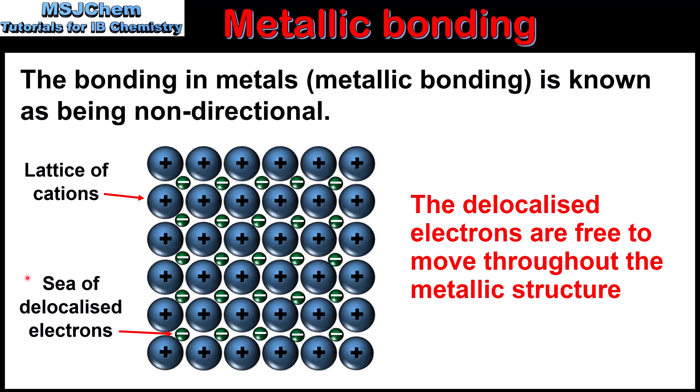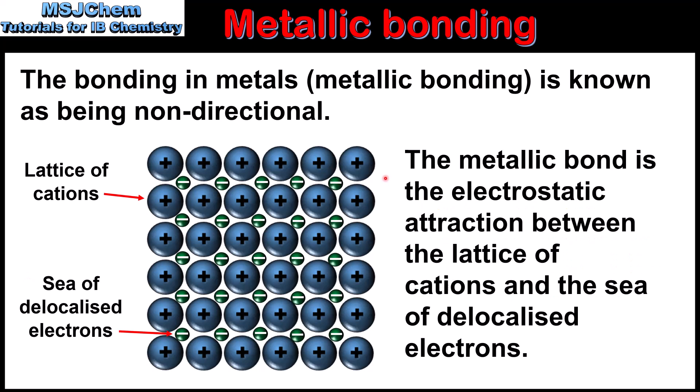As we'll see later in the video, the delocalized electrons in the metallic structure are responsible for many of the properties. On the right we have the definition of a metallic bond, which is defined as the electrostatic attraction between the lattice of cations and the sea of delocalized electrons. The attraction between the cations and the delocalized electrons is what makes up the metallic bond.